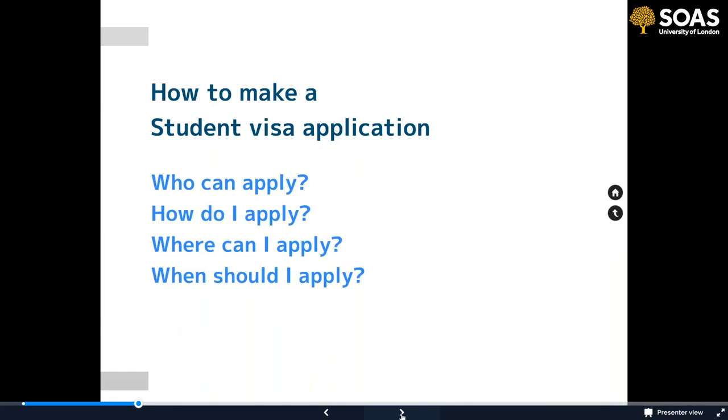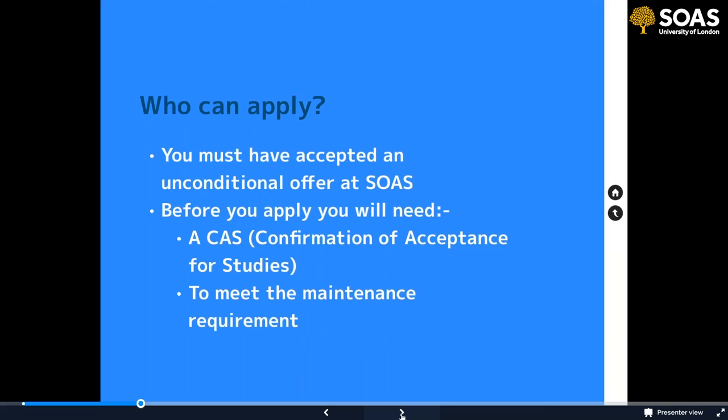To apply for a student visa, you must have accepted an unconditional offer at SOAS. Before you apply, you need two things: first, a CAS — a Confirmation of Acceptance for Studies — which is an electronic document that SOAS issues using the UKVI computer system. It confirms you're a student and that SOAS wants you to come and study. Second, you need to meet the maintenance requirements, meaning you need to show that you have a certain amount of money.